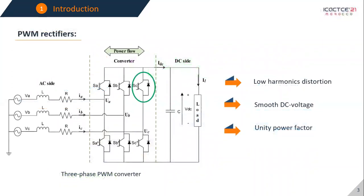PWM rectifier uses a bridge of IGBTs with anti-parallel diodes. By controlling the on and off times of the IGBTs we can achieve low distortion for the line current, smooth DC voltage as well as unity power factor.